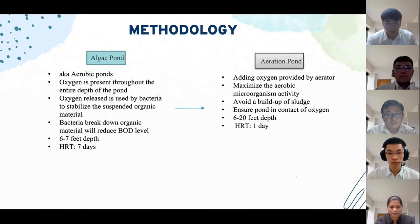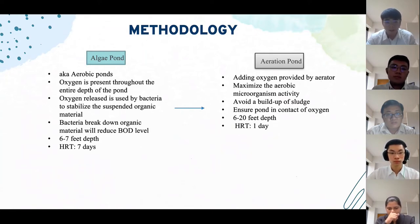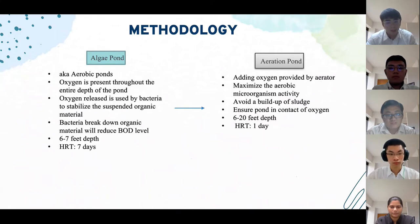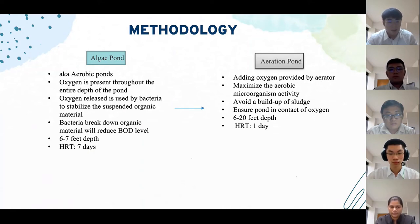Moving on to the last pond, which is the aerated pond. Oxygen provided by aerators is added to increase dissolved oxygen levels in the pond, thus maximising aerobic microorganism activity. The aerated pond is also used to avoid build-up of sludge and to ensure the entire pond is in contact with oxygen. This pond is usually 6 to 20 feet deep with an HRT of only one day. After passing through all these ponds, the effluent is now safe to be discharged. That's all from me; I will now pass the flow to Yin Liang.